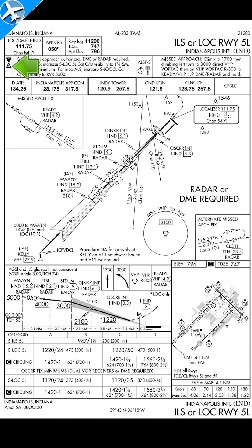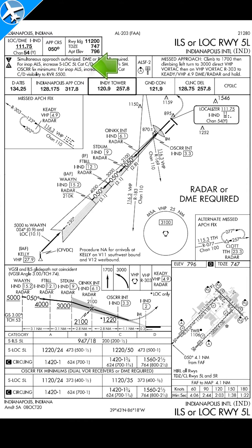The T and the A in the notes box — the T is telling you there's takeoff minimums, and the A means non-standard alternate minimums exist. The text in this box contains procedure notes, equipment notes, and requirements.